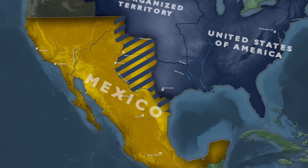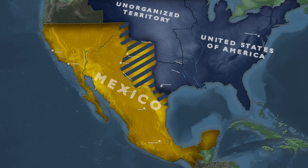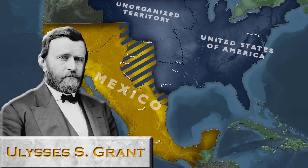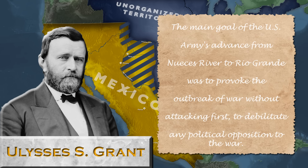We have an ill-prepared Mexico with internal revolts and an emerging power that looks to expand more and more. Mexico was weaker, but the US did not want to look like a bully. Even so, Ulysses S. Grant, who had opposed the war but served as an army lieutenant in Taylor's army, claims in his personal memoirs that the main goal of the US army's advance from the Nueces River to the Rio Grande was to provoke the outbreak of war without attacking first, to debilitate any political opposition to the war.